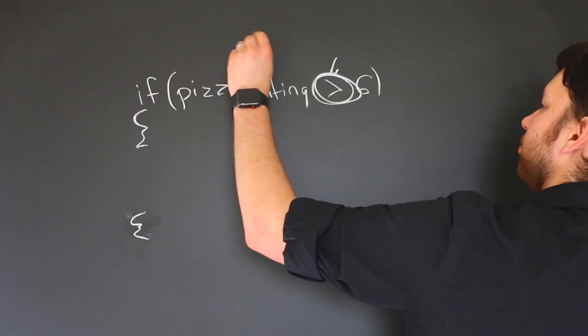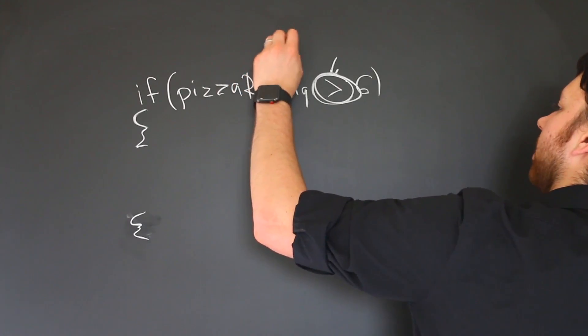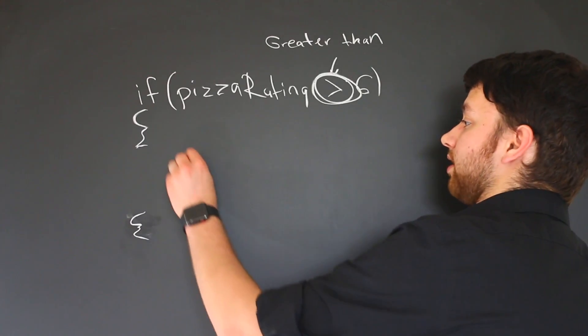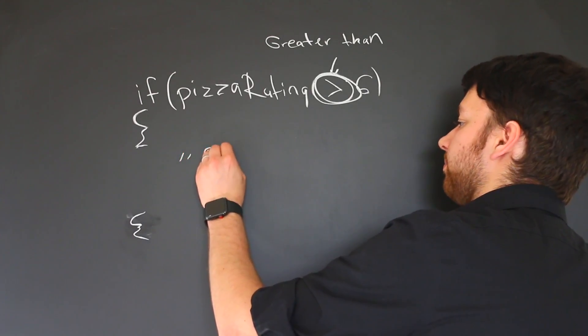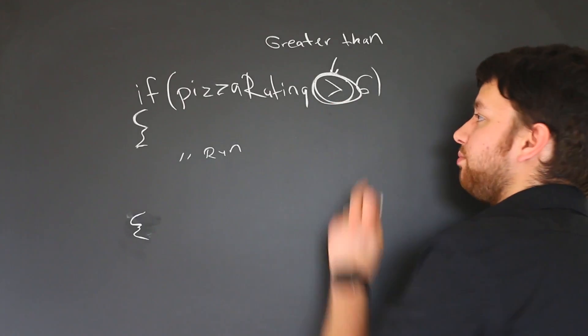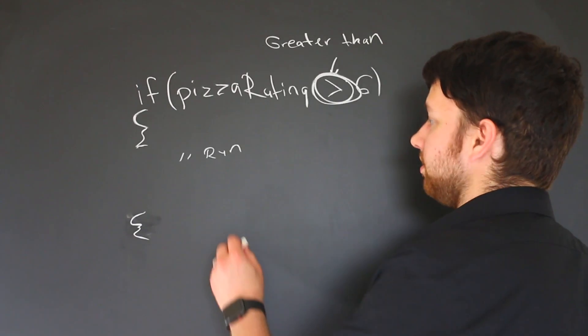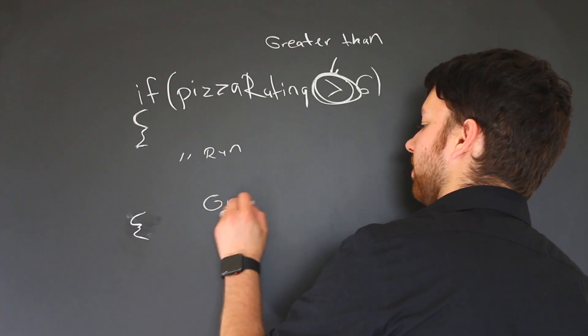This is an example, and this is specifically the greater than, so it would accept seven, eight, nine, ten, eleven, anything greater than six, and this will run. So this is just an example of one of the relational operators. Let's talk about some of the other ones.